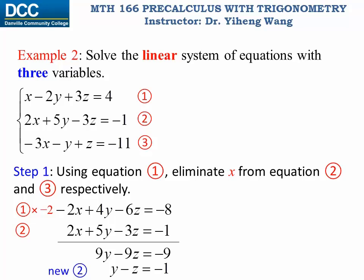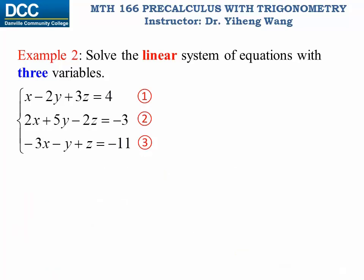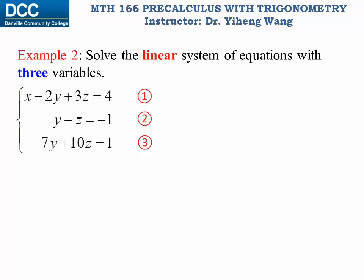Then I'm going to use equation one to eliminate x from equation three. To do that I multiply equation one by three, and equation three stays the same. Again, the coefficients of x in the two equations only differ by sign, so when I add them together x gets cancelled out. I'm left with negative seven y plus ten z equals one, and this is my new equation three. Notice that the new equations two and three only contain variables y and z — they do not have x in them.